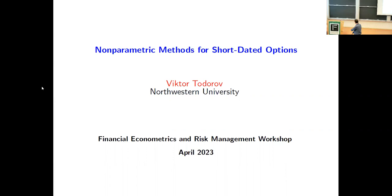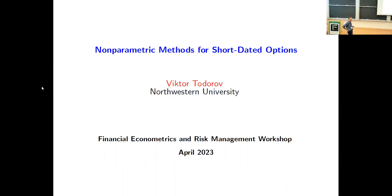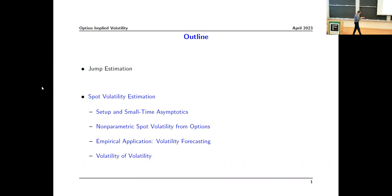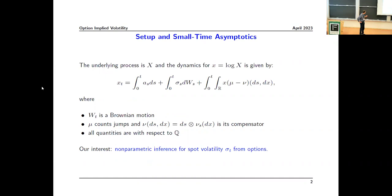This is Part Two. What I'm going to do in the second half is address what's probably the easier problem — it relates to things which many more people have probably studied. What I'll be talking about is spot volatility. I won't be estimating the jump part, but I will be trying to estimate the remaining component in the price dynamics that we saw.